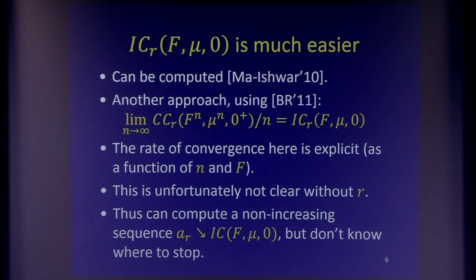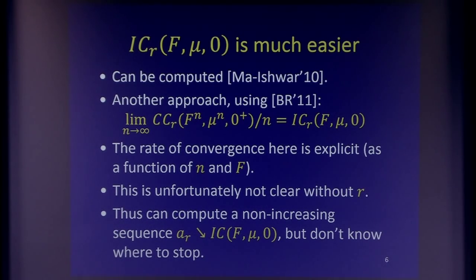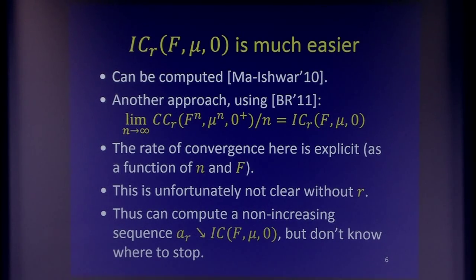Unfortunately, it's not clear how to generalize this without the R. What we get is a non-increasing sequence of numbers that converges to the answer, but we don't know the rate of convergence, so we don't know how many terms to take. You could enumerate all countably many protocols, keeping the best so far — but it's not clear where to stop. If R is 10 to the 10 to the 10 and you're stuck at some number, maybe after more steps it will drop. This is exactly how most non-computability results arise.